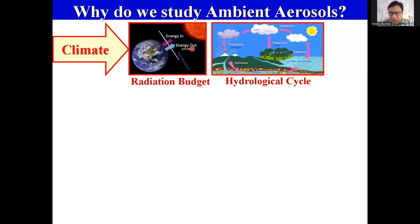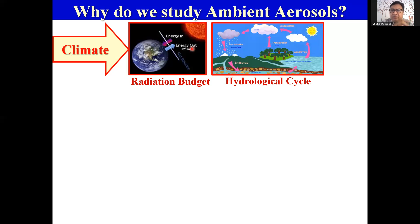Then there is the hydrological cycle. Aerosols are actually acting as seeds for clouds — clouds cannot form if there are no aerosols in the atmosphere. Water vapor needs something to condense on, and this surface is provided by aerosols. Depending on whether those particles are hygroscopic or hydrophilic, they can affect whether there will be more rain or less rain. So there is bigger research going on in this direction, but aerosols affect our hydrological cycle.